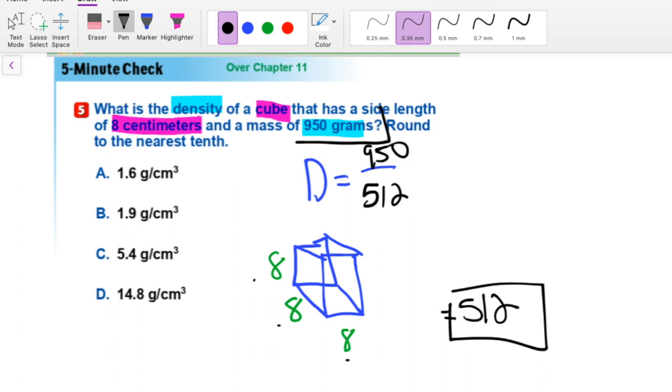And now we just put this into the calculator. 950 divided by 512, and it gives us approximately 1.9 grams per centimeter cubed. And that is our final answer.